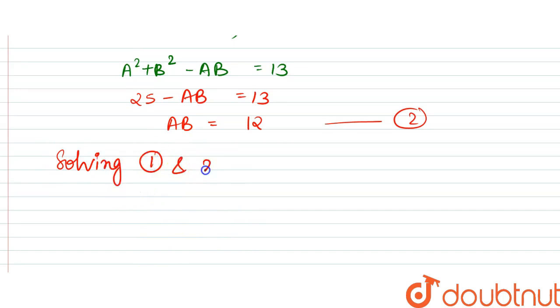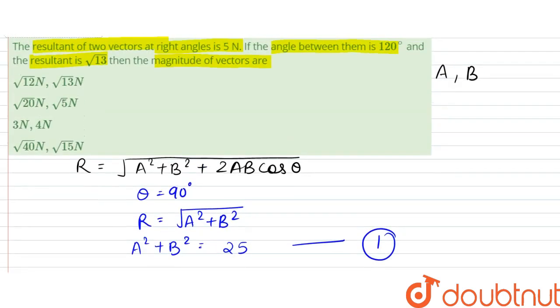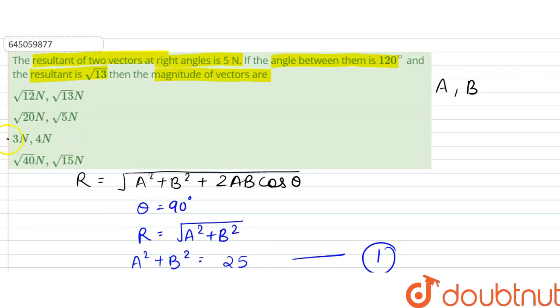From here, what we could say is that since AB is 12, solving equations 1 and 2, what we get is A to be equal to 3 and B to be equal to 4, or A would be equal to 4 and B to be 3, vice versa. So 3 comma 4 is the correct answer, so option C is the answer.